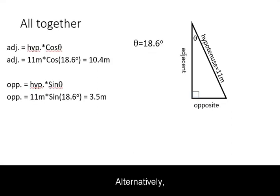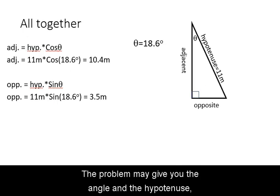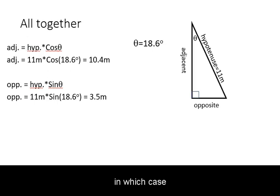Alternatively, the problem may give you the angle and the hypotenuse, in which case you use SOH CAH TOA to figure out the adjacent and opposite sides.